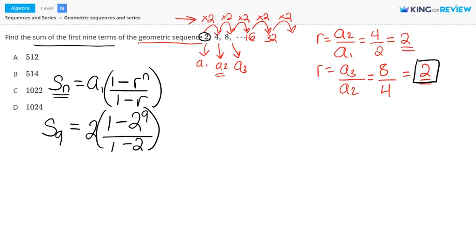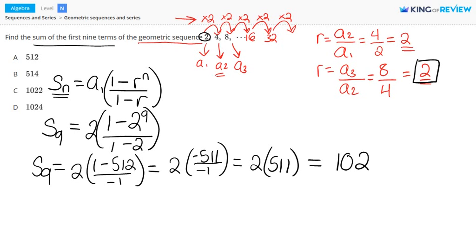So now we'll just simplify. S9, the sum of the first 9 terms, equals 2 times 1 minus 512 divided by negative 1, and this equals 2 times negative 511 divided by negative 1, and we get 2 times 511, and finally this equals 1022.